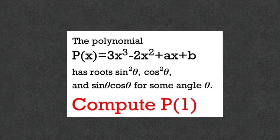The polynomial p(x) is equal to 3x³ - 2x² + ax + b. It has roots sin²θ, cos²θ, and sinθcosθ for some angle θ. We have to calculate p(1).